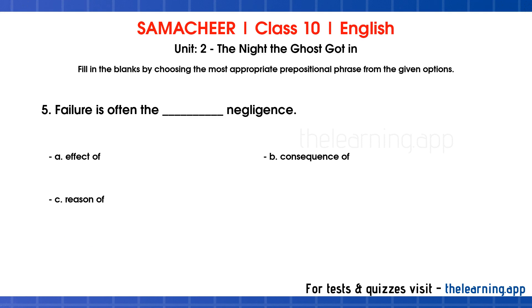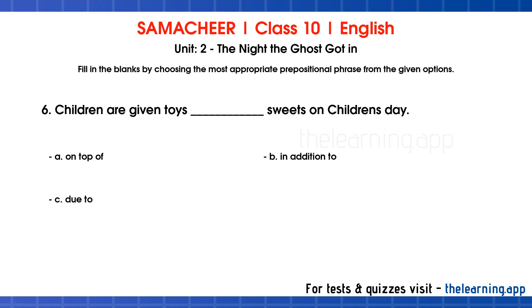Question 5: Failure is often the — negligence. Options are: a. Effect of, b. Consequence of, c. Reason of. Correct answer is b. Consequence of.